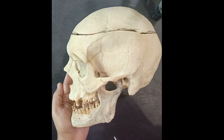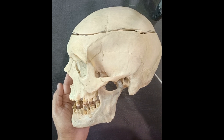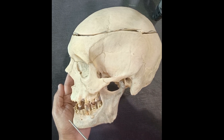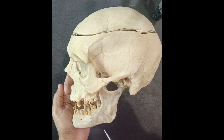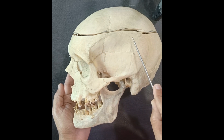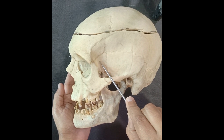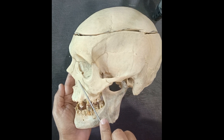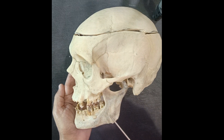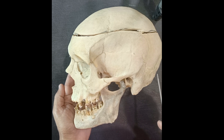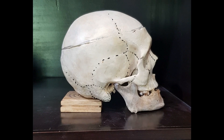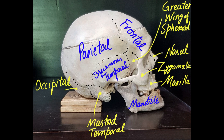In normal lateralis, or the lateral view, a variety of bones can be seen. These include the frontal bone, parietal bone, squamous part of the temporal bone, sphenoid bone, zygomatic bone, maxilla, nasal bone, mandible, mastoid bone, and the anterior aspect of the occipital bone.